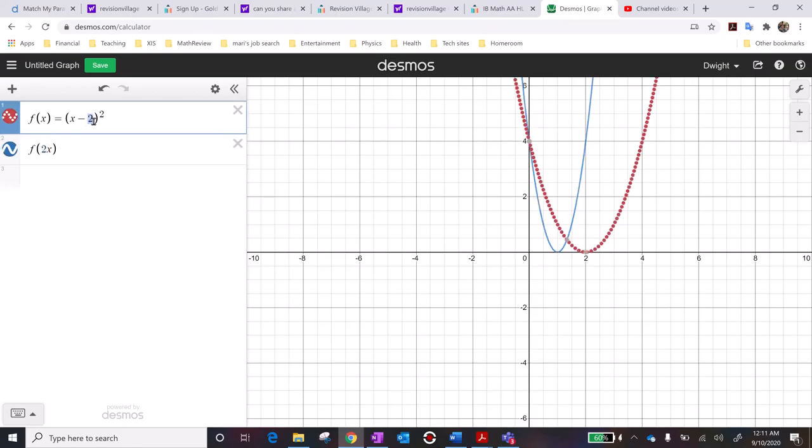So like what used to be, this is like a horizontal translation of right 2 units from the parent function. It changed it to a horizontal translation of 1 from the parent function, which would have gone through 0, right? Because we're multiplying every single x coordinate by 2.